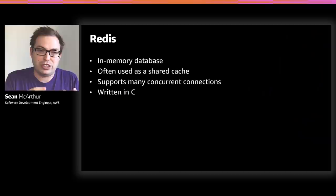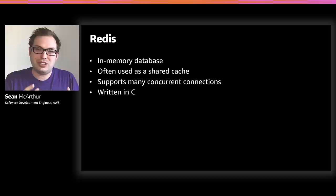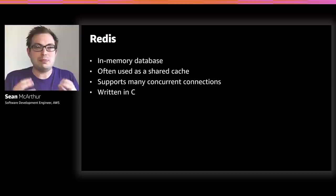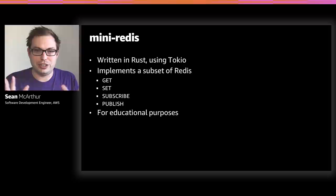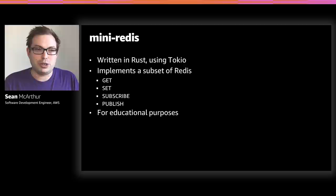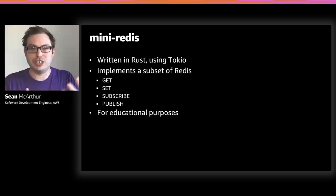First, we're going to talk about what Redis is, because we rewrote Redis. Redis is an in-memory database, as opposed to a persistent database — the thing that Carl wants to write. It's a single process, usually with many, many machines all trying to talk to it. So it needs to support many concurrent connections, it needs to be really fast, and it's written in C. For our example, we thought: let's rewrite Redis. We called it mini-Redis and we rewrote it in Rust using Tokyo. It's mini-Redis because it only implements a subset of Redis — we'll only be looking at get and set. Subscribe and publish are in the full example if you want to go take a look. And it's worth repeating: this is for educational purposes. We didn't write an actual replacement for Redis. This is just for learning.